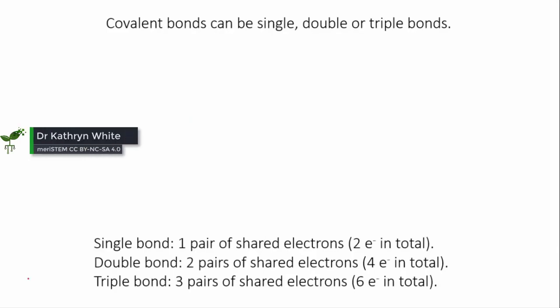So far, we've said that a single covalent bond consists of one pair of shared electrons. However, it is possible to form double and triple bonds as well.